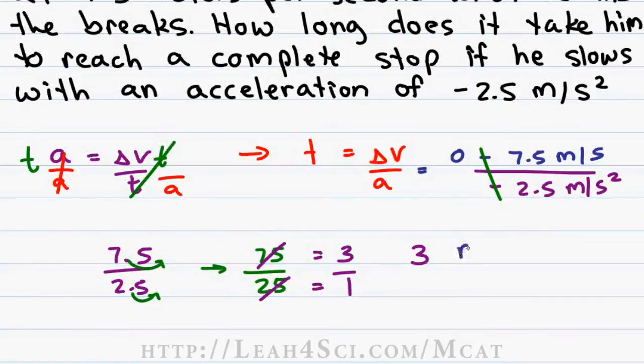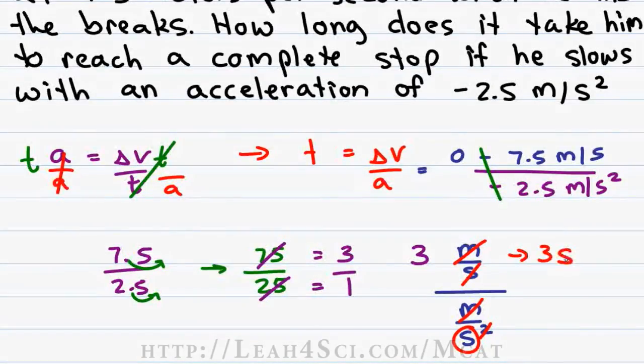Now let's take a look at our units. We have meters per second divided by meters per second squared. Meters cancels meters and seconds cancels one of the seconds in second square which is second times second. Leaving us with just seconds as our answer because 1 over 1 over second is second for a final answer of 3 seconds.